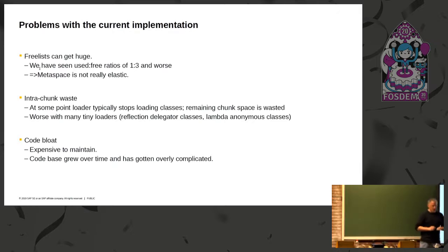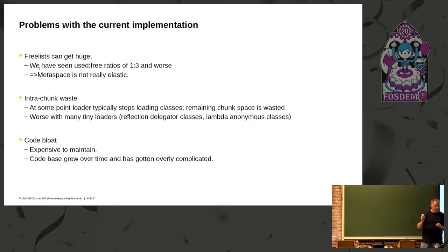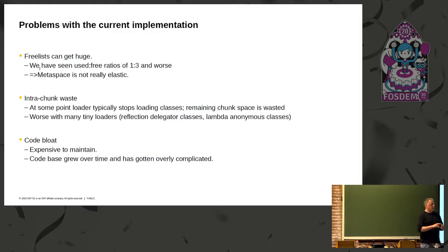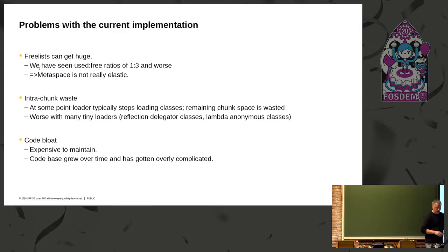The problem with the current implementation is that the free list can get really huge. We have seen customer setups with used-to-free ratios of one to three, meaning only a quarter of the memory allocated for Metaspace is actually being used. This is even worse in JDK 8, though somewhat mitigated in JDK 11 — which is a good reason to upgrade. Another thing is intra-chunk waste, which can be between 2% and 15%. Basically, every loader at some point stops loading classes, and the remainder of its current chunk is wasted. The problem gets worse the more fine-grained the loaders are.